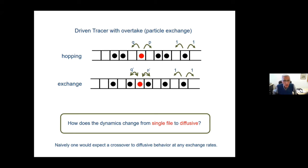What I want to consider is what happens when this driven tracer can overtake other particles. I want to add the possibility of this tracer to exchange with other particles or to cross them. And the question is, what's going to happen when you add that? Is it going to immediately go to simple diffusive behavior? Or is it going to retain its features like single file dynamics? And from the case of non-driven particles, naively we would expect that the minute you allow this tracer to exchange with the nearest neighbors, it will become diffusive.